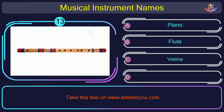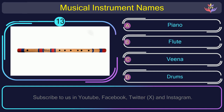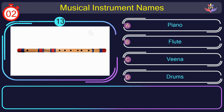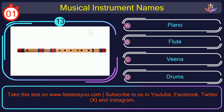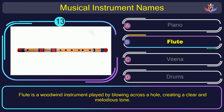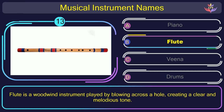Question number 13. Find the name of the musical instrument in this picture. The correct answer is option B: Pungle. Pungle is a woodwind instrument played by blowing across the hole, creating a clear and melodious tone.